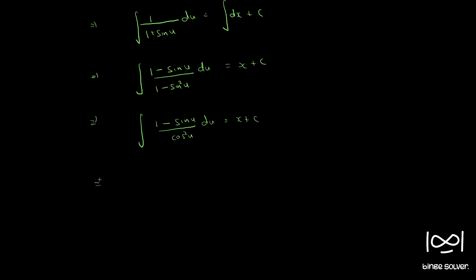We can split the terms now. So this becomes 1 by cos square u minus sin u by cos square u, which can be written as sec squared u minus sec u tan u.